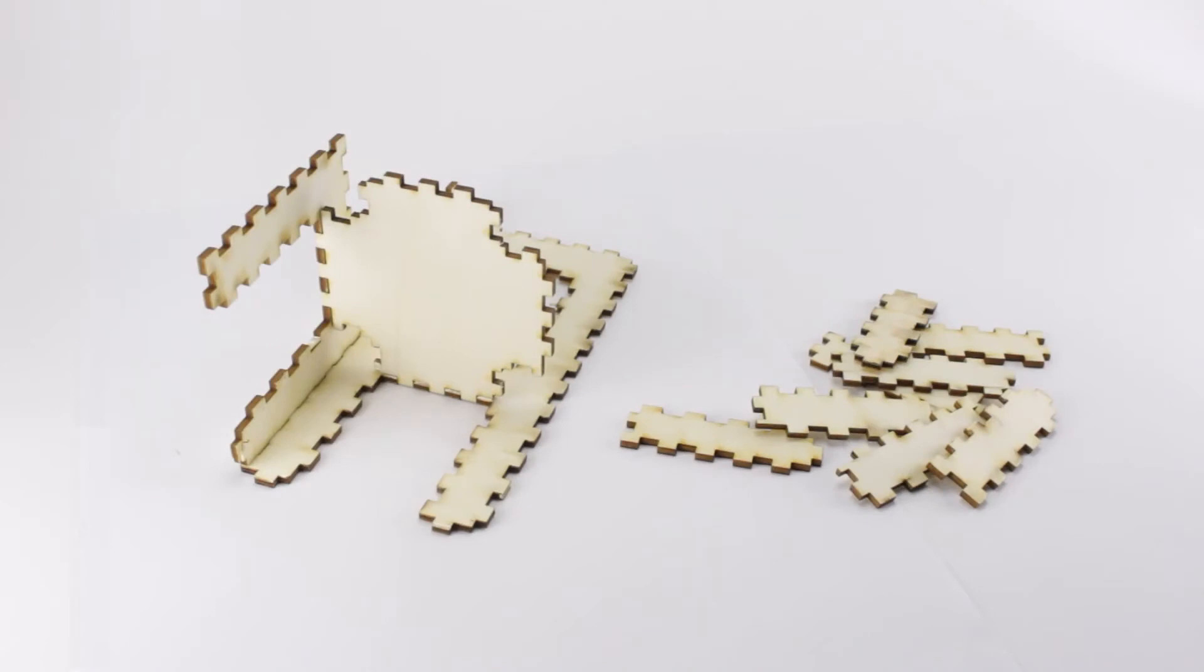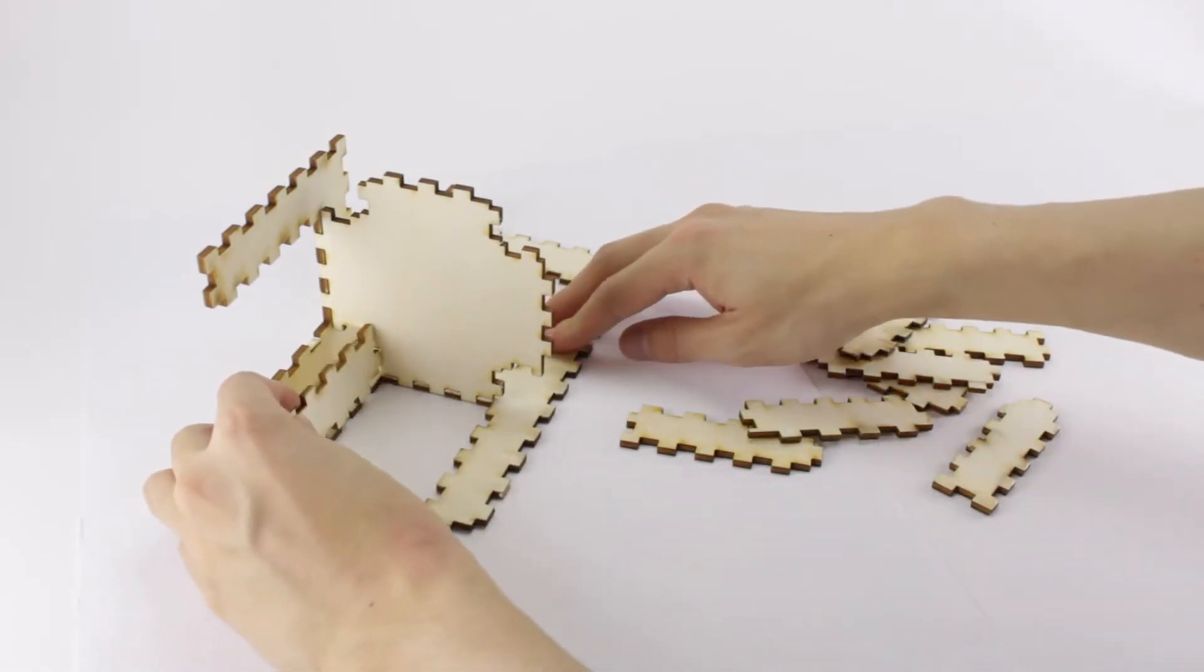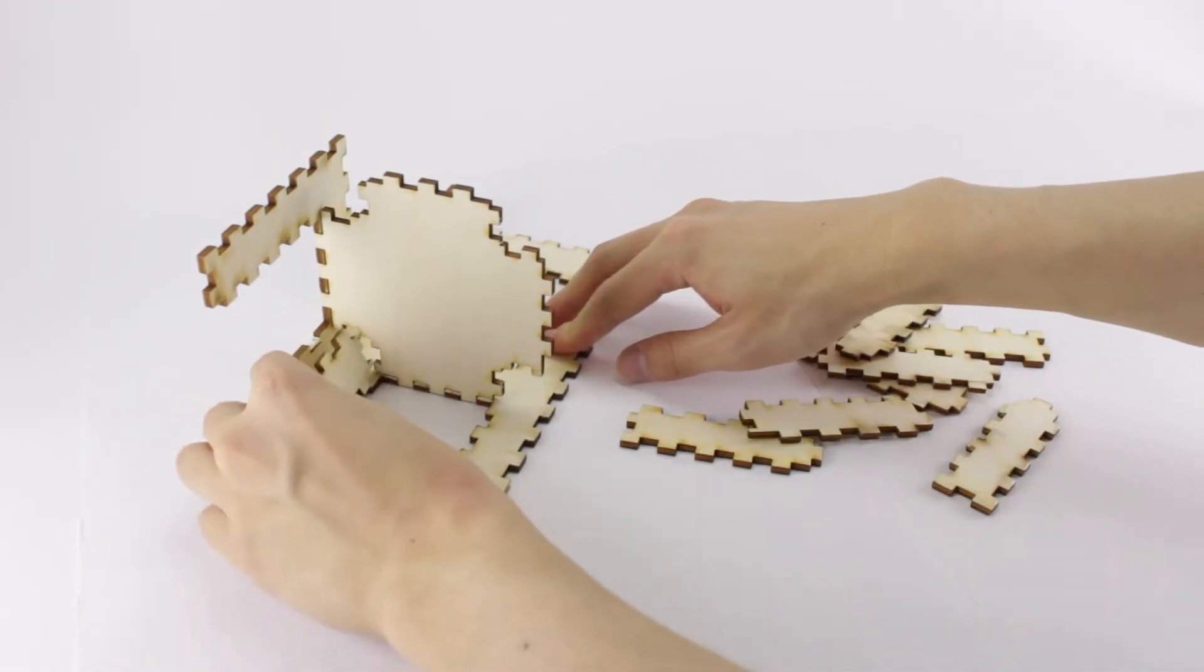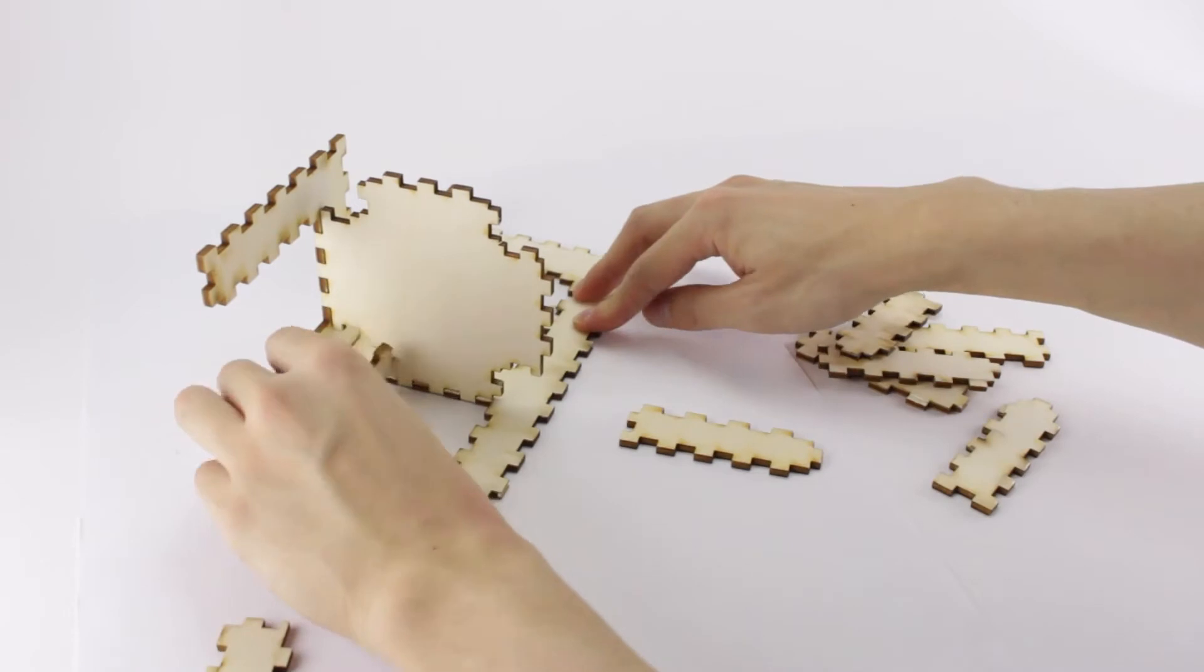FoolProofJoint addresses the following problems. First, the user wants to insert a leg piece here, but picks up an incorrect piece, tries to assemble it, and recognizes that it does not fit.